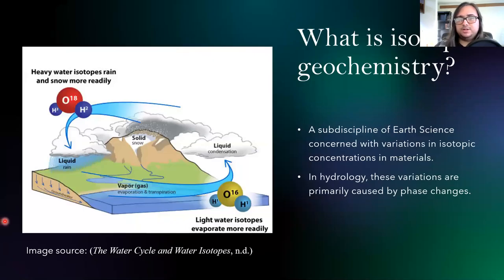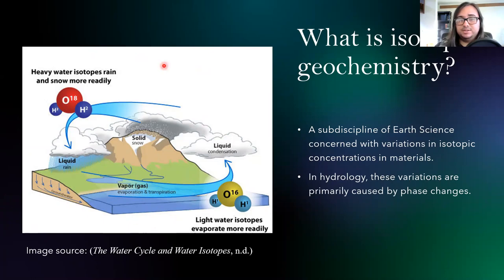Let's start by talking about what isotope geochemistry is. It's a sub-discipline of the larger earth sciences that specifically looks at the ratios and concentrations of different isotopic species, be they in rocks, lava, water, or even man-made materials like plastics. Today we're specifically going to look at water, and this diagram on the left shows how different isotopic species and their concentrations change as water travels through the water cycle.